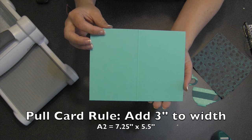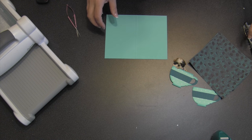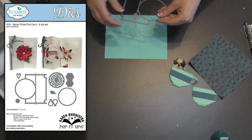The pull card rule is you add three inches to the width. So if you want an A2 card, which is four and a quarter by five and a half when you're done, you need to start with seven and a quarter by five and a half. I scored the cardstock in the middle for folding.